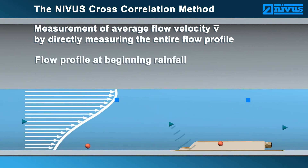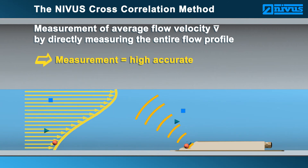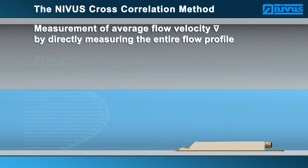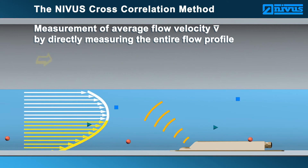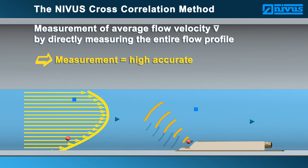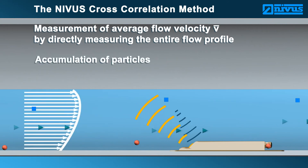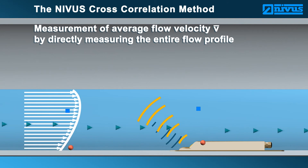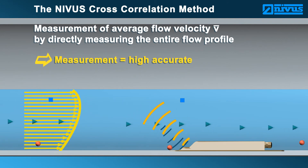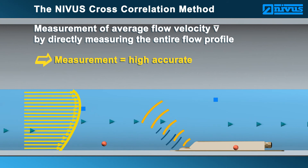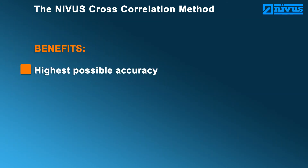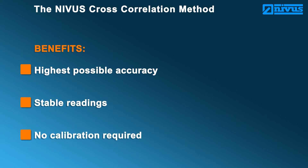The sensor even detects flow profile changes due to events such as rainfall, and the measurement remains highly accurate. The measurement results remain highly accurate even in case of backwater formation caused by obstacles such as sedimentation, elbows or throttle equipment. Even accumulation of particles within the medium has no effect on the measurement. The NIVUS cross-correlation method offers: highest possible accuracy, stable readings, and no calibration required.